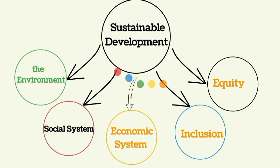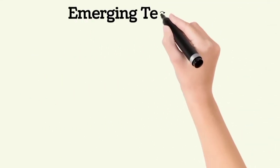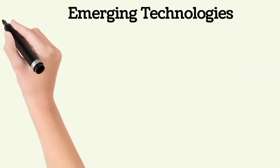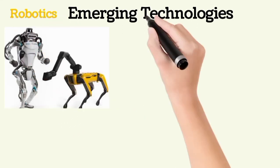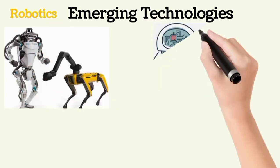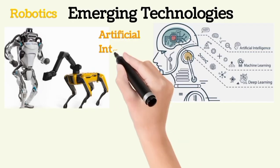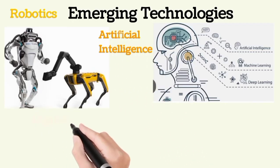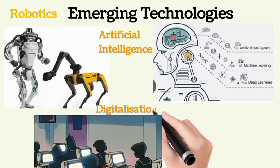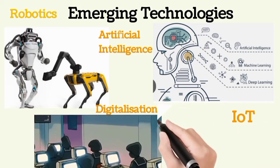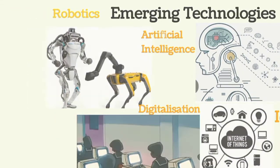It is also important for us to discuss emerging technologies. This provides us with the opportunity to leverage the fourth industrial revolution technologies to develop sustainable solutions. These include but are not limited to robotics, digital solutions, artificial intelligence, machine learning, IoT, among others.